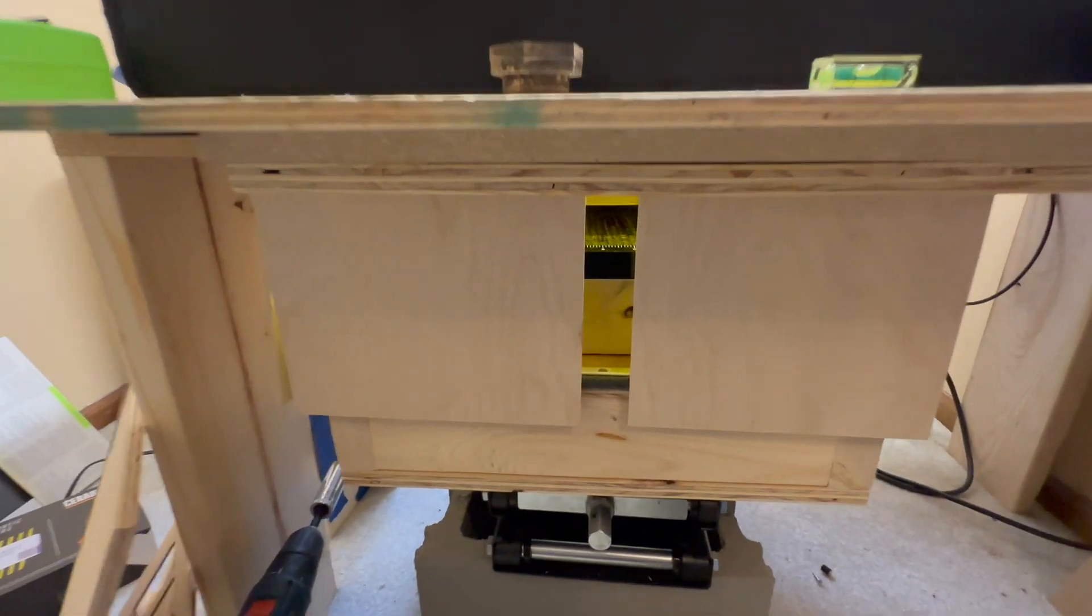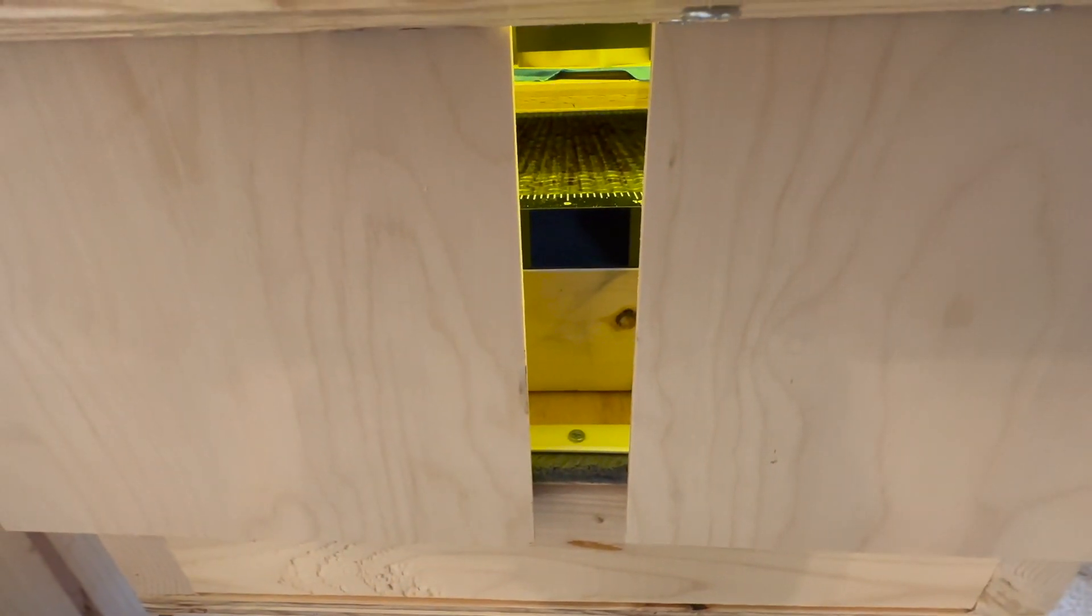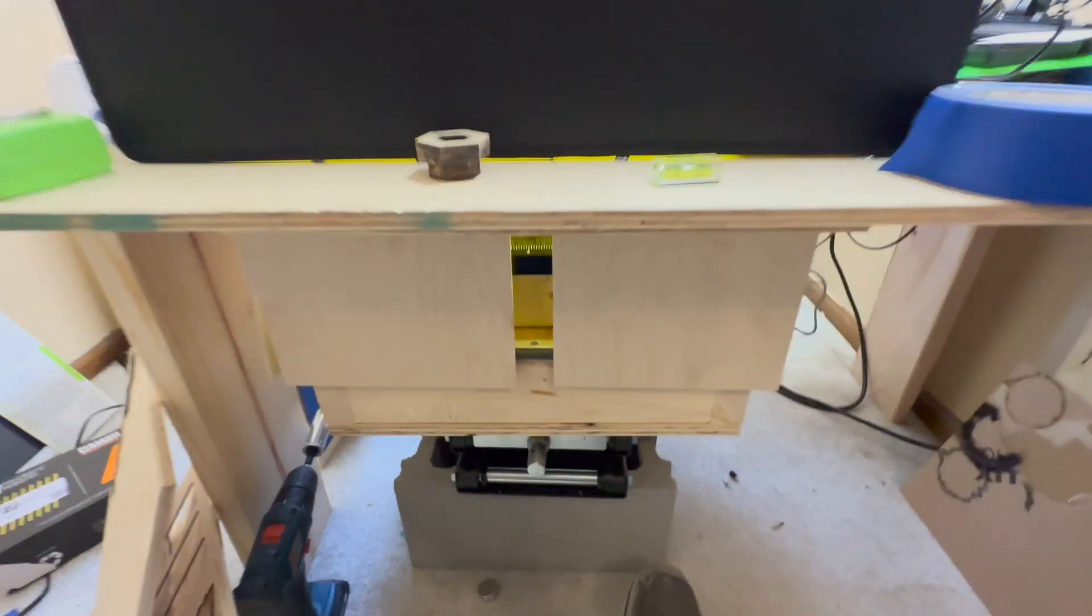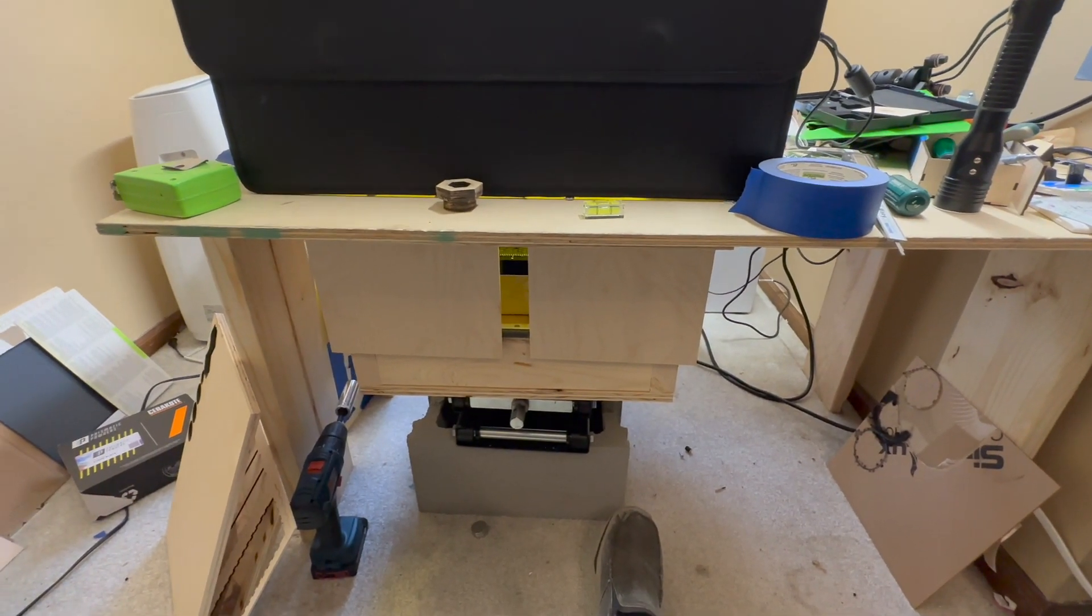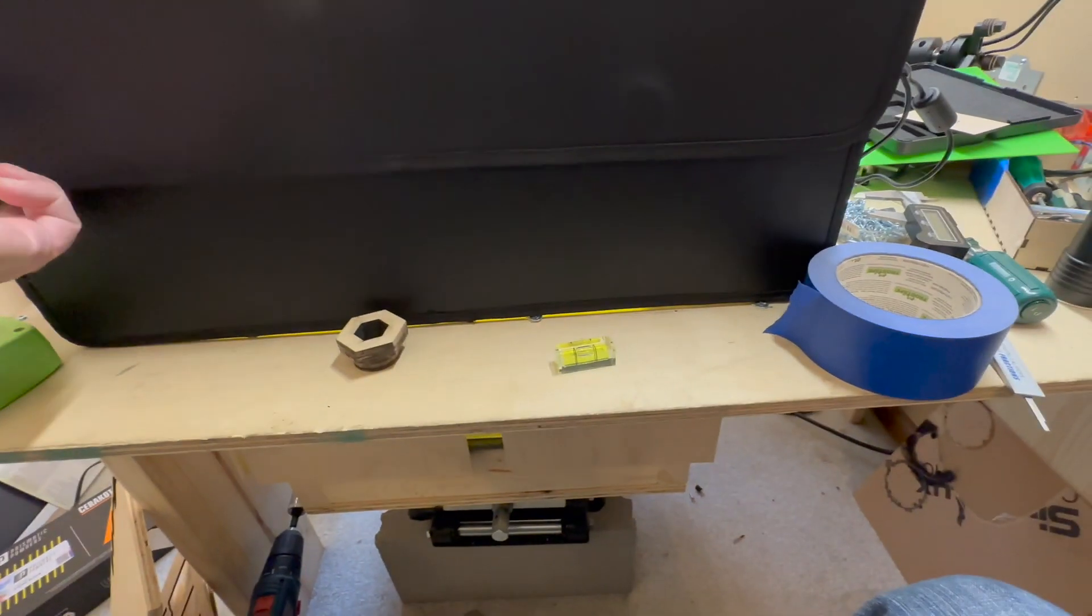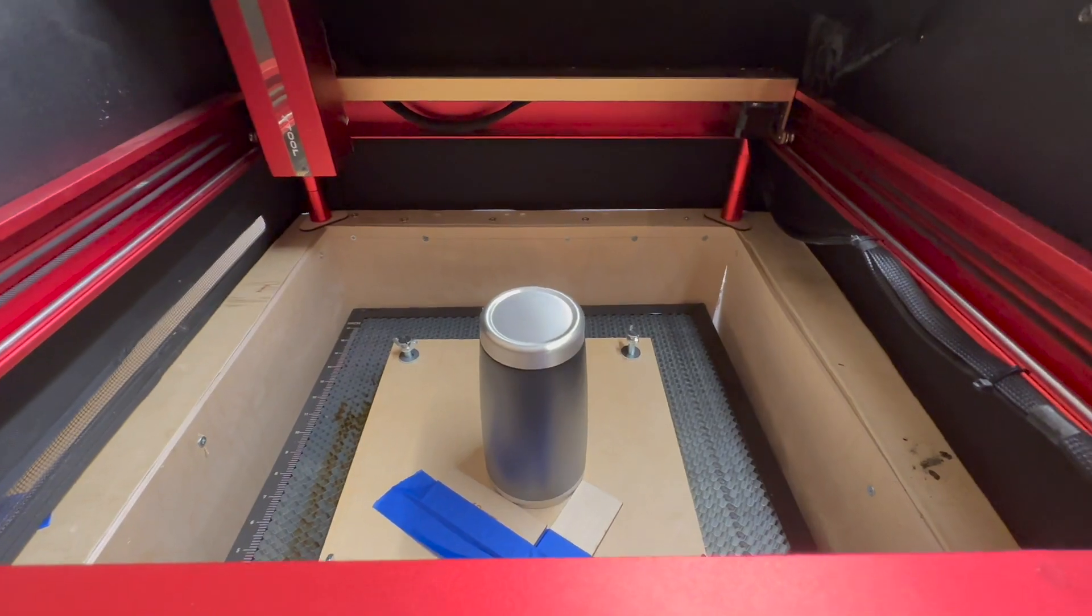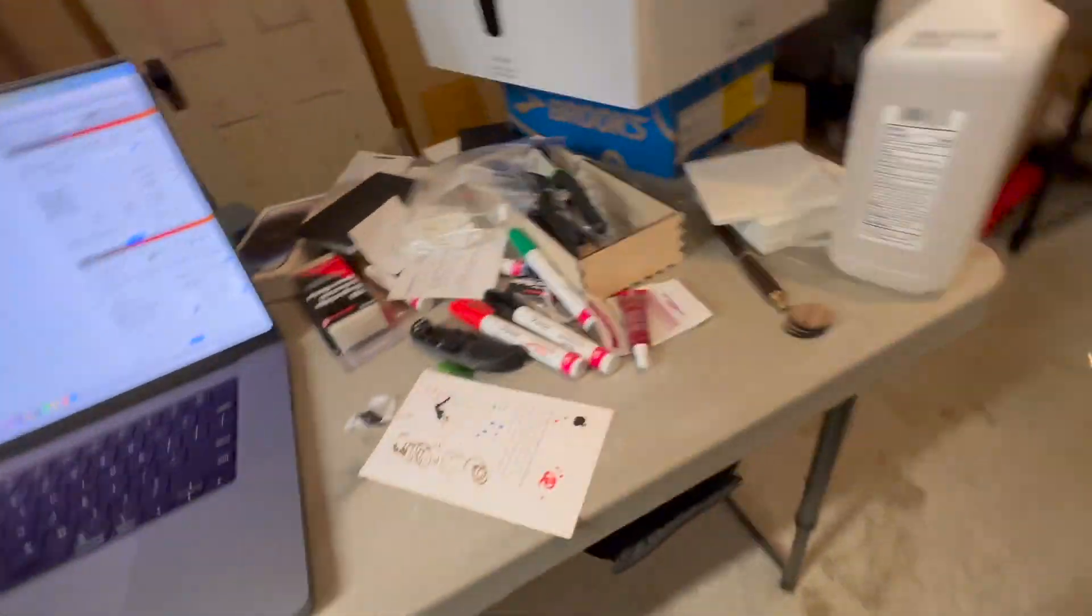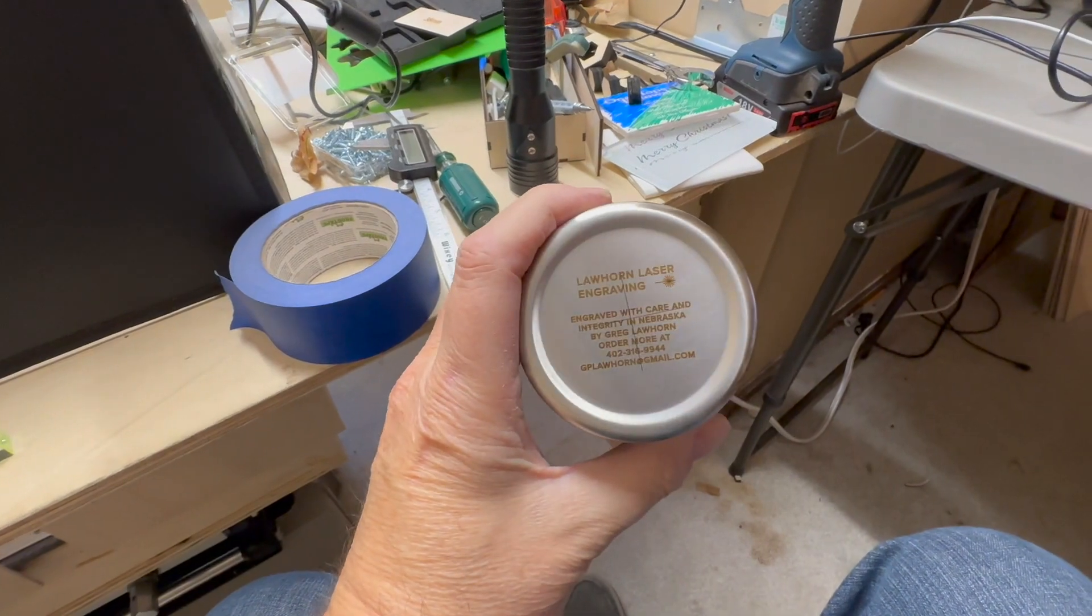And then I have, you can kind of see through the gap there, I've got some 2x4s and then the honeycomb on there. Now the reason that I did that is I found that I was doing three different actions. I was making tumblers and I wanted to engrave the bottom of the tumbler with my information because I'm selling them.